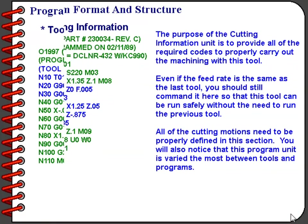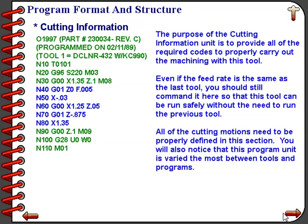The cutting section of your program requires all the codes necessary to completely machine the workpiece for this particular process and with this particular tool. Even if the feed rate is the same as the previous tool, you should still program it within this section. Remember, you want each tool to be thought of as its own unique little program.